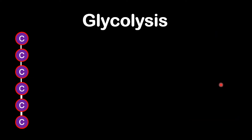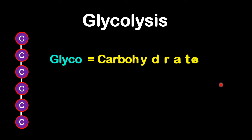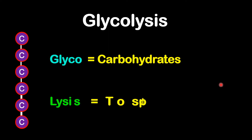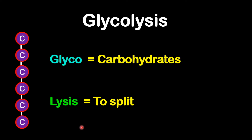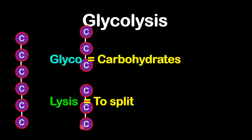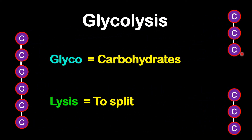The word glycolysis — the part 'glyco' refers to carbohydrates, and 'lysis' means to split. So the process of glycolysis is splitting carbohydrates into two molecules which we call pyruvates.